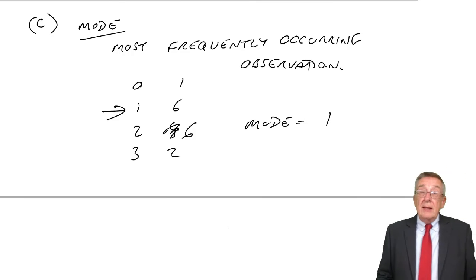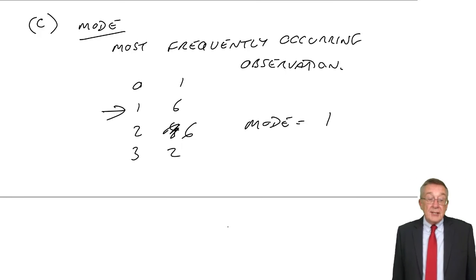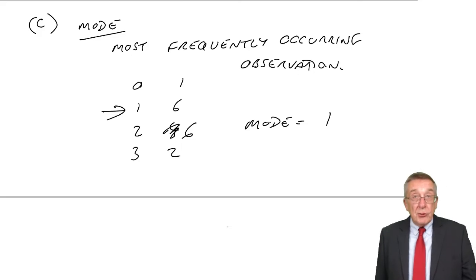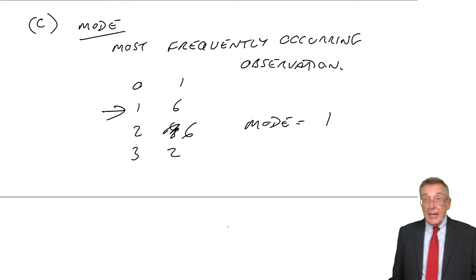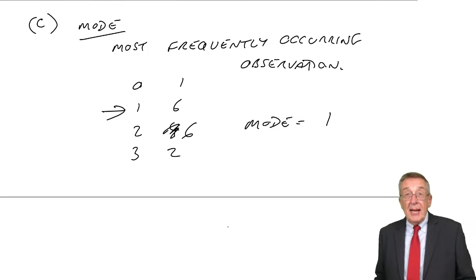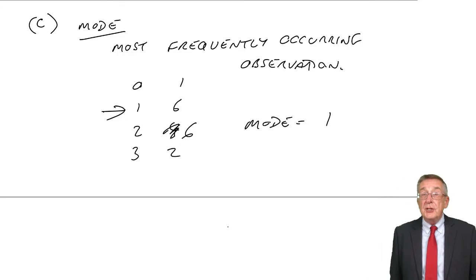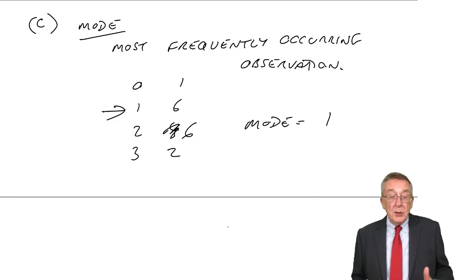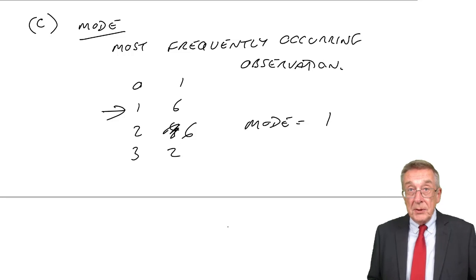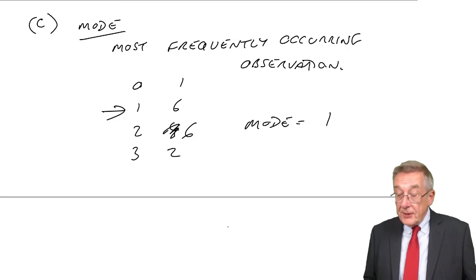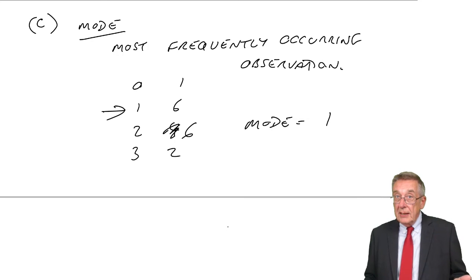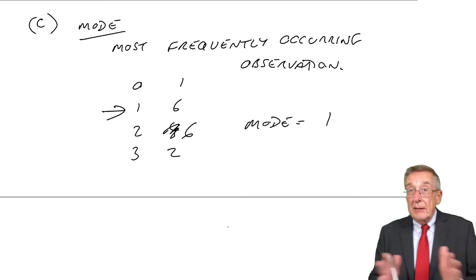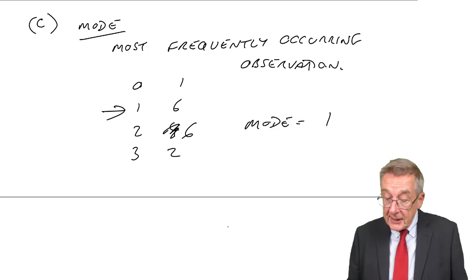Anyway, there are the measures. However, the examples we looked at were all discrete variables. I need to show you, in the next example — but I'll split the lecture — how we can do it when we've got continuous variables. So we'll look at the same three — mean, median, mode — but for continuous variables. That's the next lecture.